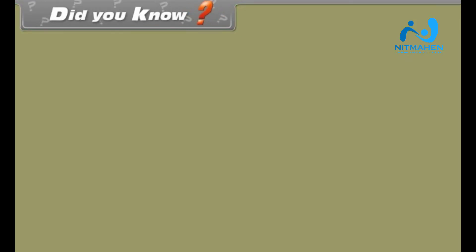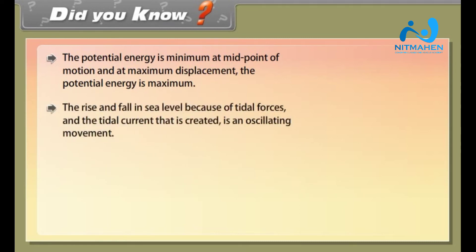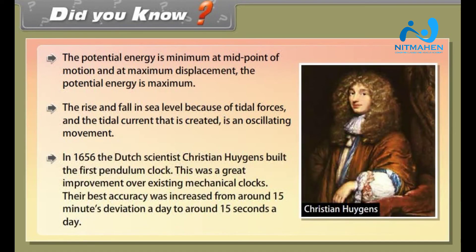Did you know? Potential energy is minimum at the midpoint of motion, and maximum at maximum displacement. The rise and fall in sea level is due to tidal forces, and the tidal current created is an oscillating motion. In 1656, the Dutch scientist Christiaan Huygens built the first pendulum clock, improving accuracy from around 15 minutes deviation per day to around 15 seconds per day.